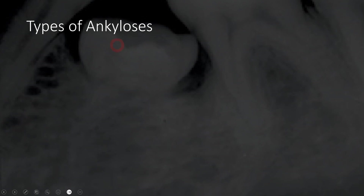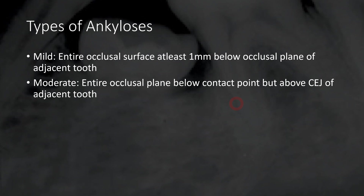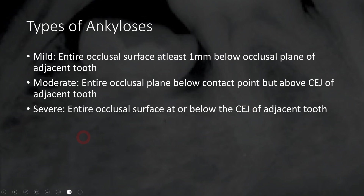Regarding the different types of ankylosis: mild ankylosis is where the entire occlusal surface is at least one millimeter below the occlusal plane of the adjacent teeth. Moderate ankylosis is where the occlusal surface is below the contact point of the adjacent tooth, or above the cemento-enamel junction of the adjacent tooth. Severe ankylosis is when the entire occlusal surface is at or below the cemento-enamel junction of the adjacent tooth. This classification is used to categorize ankylosis as mild, moderate, or severe.